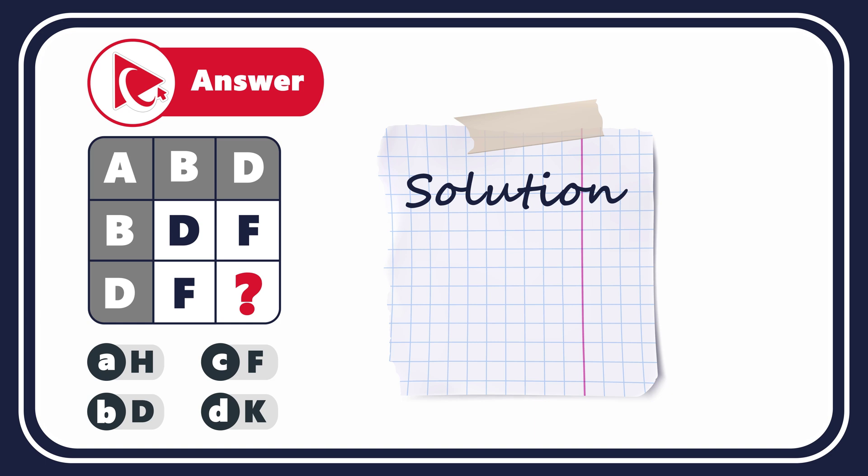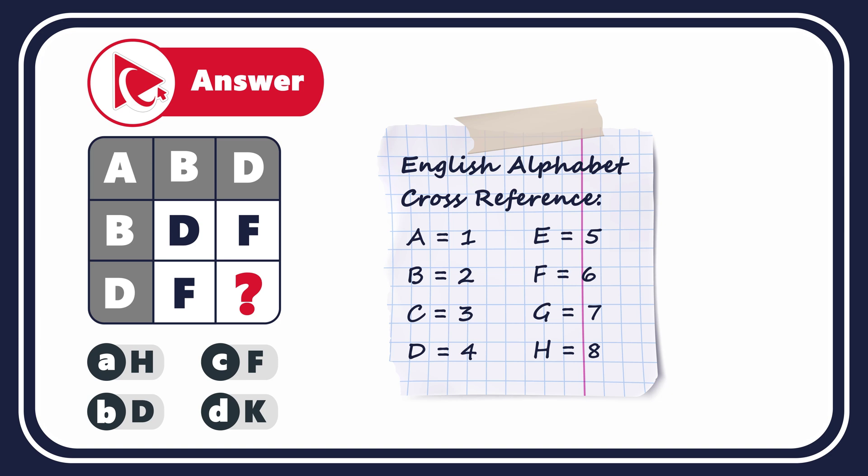To answer this question correctly, let's look at our matrix from a little different dimension. Each letter here corresponds to a specific place in the alphabet, which can be represented by a number. For example, letter A equals 1, letter B 2, C 3, and so on. If we follow this logic, we can replace all letters in all three rows with numbers.